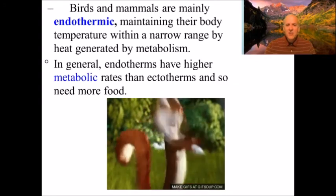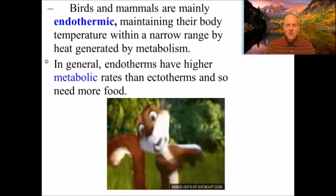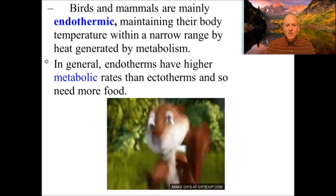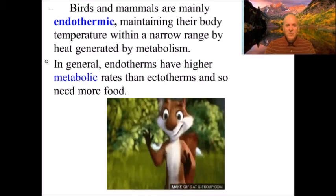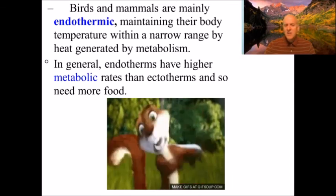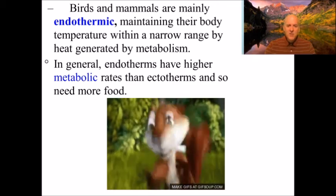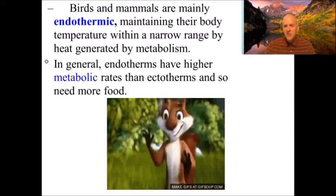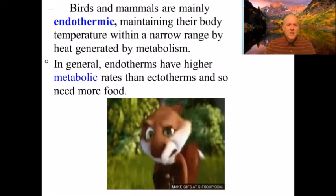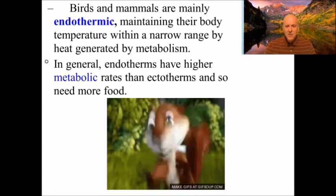Birds and mammals are mainly endothermic, maintaining their body temperature within a narrow range by heat generated by metabolism. In general, endotherms have higher metabolic rates than ectotherms and need more food. Your body temperature stays in a very narrow range — just a few degrees above or below 98.6°F makes you very uncomfortable. A fever of 101°F is only about three degrees above normal, yet you feel terrible. A drop of just three or four degrees in core body temperature causes severe shivering.